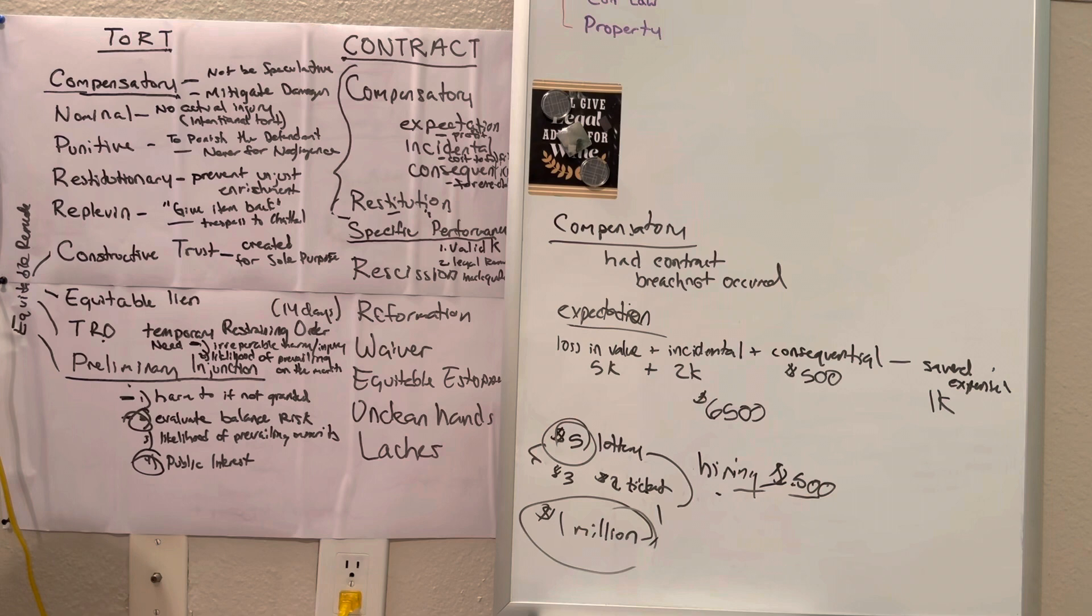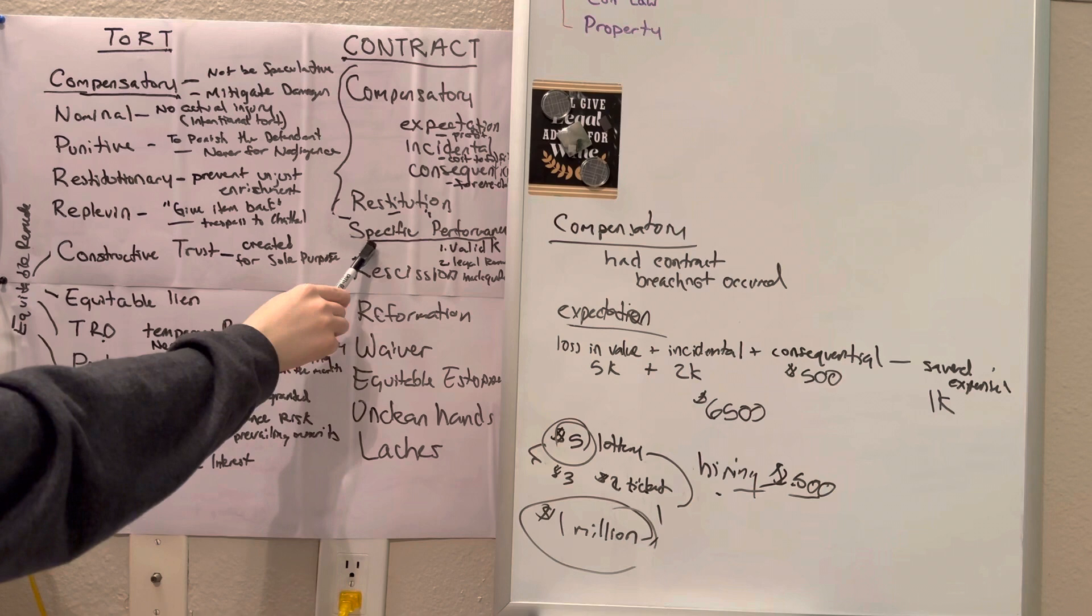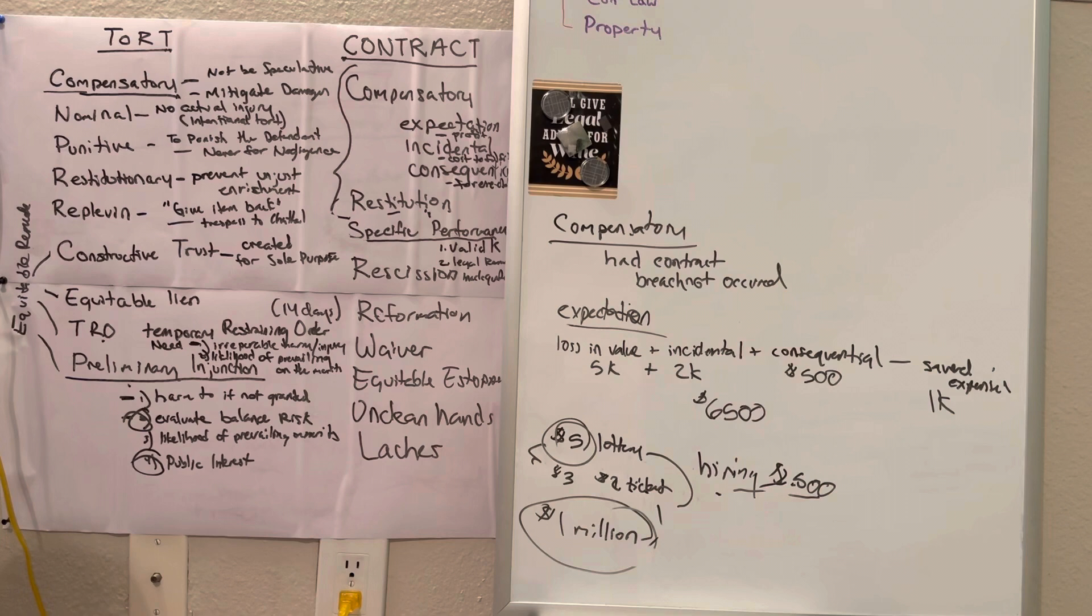Personal property is generally not unique, so damages are usually granted when personal property is at stake. However, specific performance is appropriate if the goods are one of a kind, rare, have sentimental value, or circumstances otherwise make specific performance appropriate. Real property is always considered unique, so specific performance is generally an appropriate remedy for a breach of a contract involving the sale of land. But a plaintiff may also recover damages, i.e., the difference between the market value of the land and the contract price.